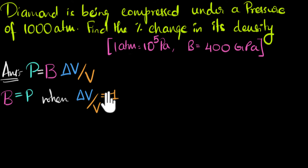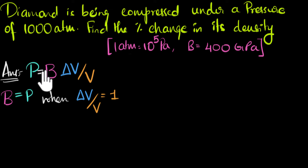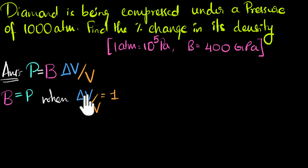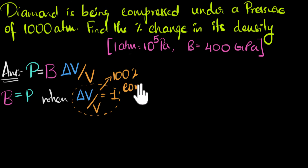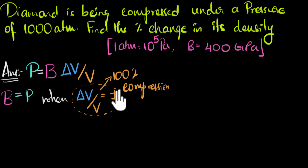And what does it mean that delta V over V equals one? Delta V is the change in volume, and under pressure the volume decreases — the material shrinks, so the change in volume is negative. But delta V is the change in volume and V is the initial volume. So if delta V over V equals one, we are saying the change in volume equals the initial volume — that's a 100% compression. So we can think of bulk modulus as the amount of pressure needed for 100% compression.